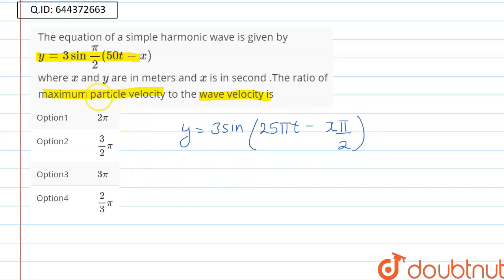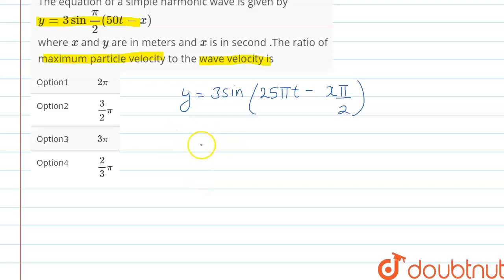So we know the particle velocity, that is maximum particle velocity, is Vp_max = A × ω, where A is the amplitude and ω is the angular frequency. In this equation, we can see that the amplitude is 3 and ω is 25π.